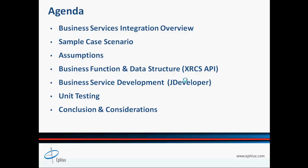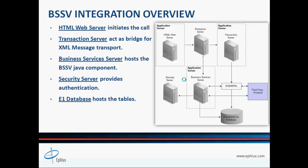In part two of this video, we will continue with our business function and discuss the XRCS API for XML communication between the business function and business service. In part three, we will continue with our business service development using JDeveloper and talk about the major components of a business service. In part four, we'll cover unit testing your business function and business service for ensuring smooth, trouble-free deployment and execution. Finally, in the conclusion segment, we'll discuss important points to consider during design and development of your business services.